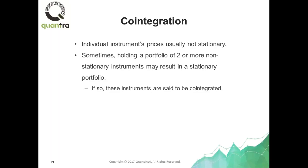Now, it's good that we have such a test, but unfortunately, if you run it on most time series, you will find that it cannot reject the null hypothesis, because most time series are not stationary. We have seen the examples: GLD is not stationary, GDX is not stationary. If you apply it to SPY, you're going to find that it's not stationary either. So what's the use of having a test when most instruments fail it?